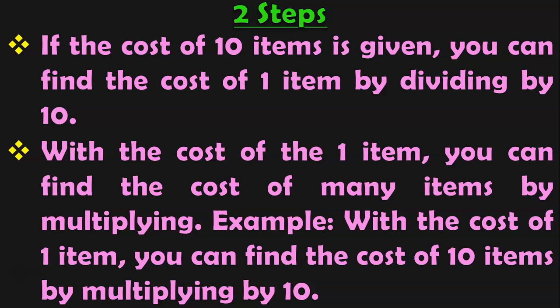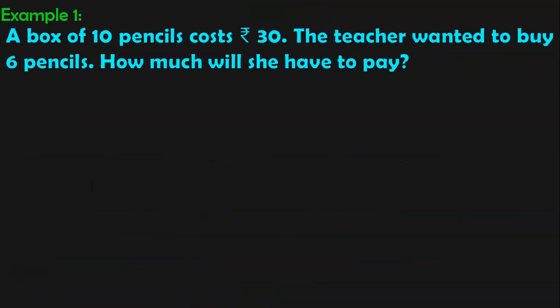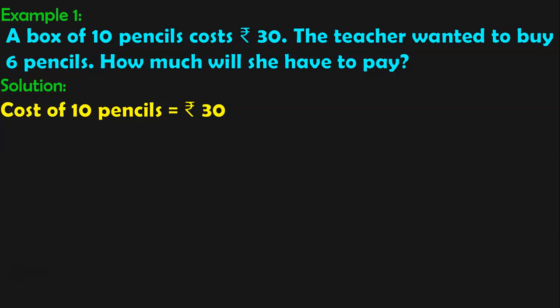Let us do some example sums to understand the concept of Unitary Method better. Example 1: A box of 10 pencils costs Rs. 30. The teacher wanted to buy 6 pencils. How much will she have to pay? Let us first write down what is given to us. Cost of 10 pencils is equal to Rs. 30. What are they asking us to find? Cost of 6 pencils. For the Unitary Method, the first step is to find the cost of 1 pencil first.